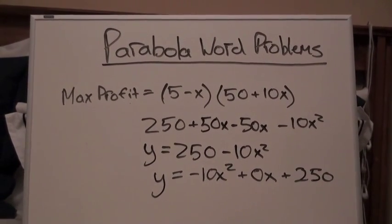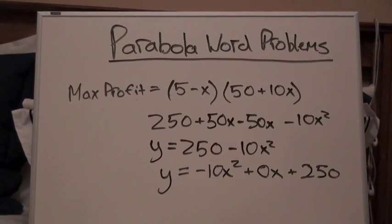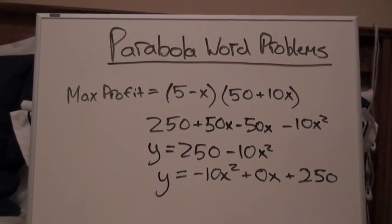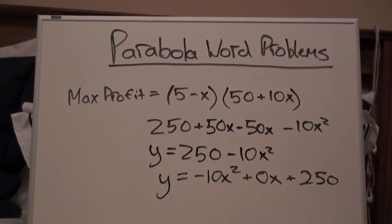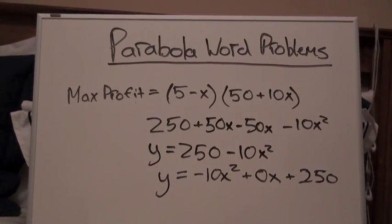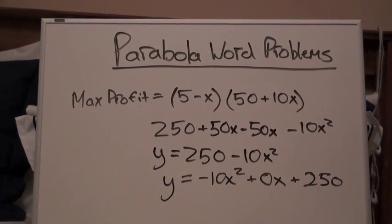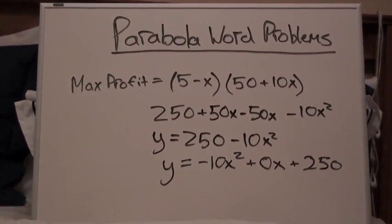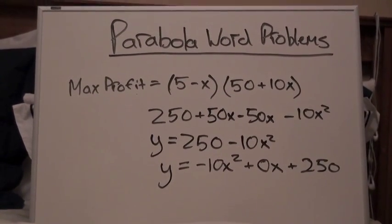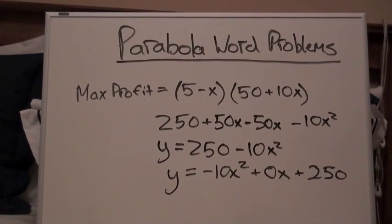To find out if Ethan is maximizing his profit, we can put his scenario into a parabola. By doing this, we put his scenario into the max profit formula. To do this, we put (5-x) times (50+10x). In this problem, x equals the number of dollars he's going to reduce his price by.